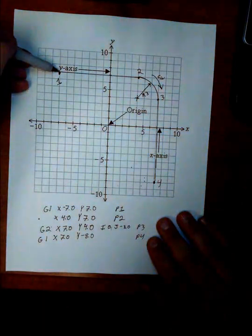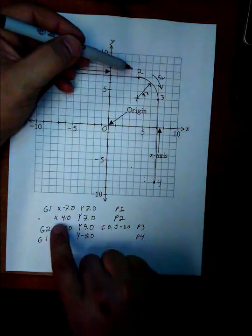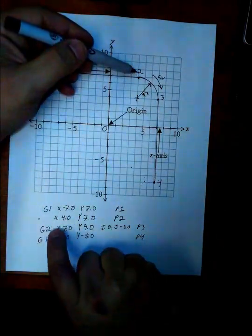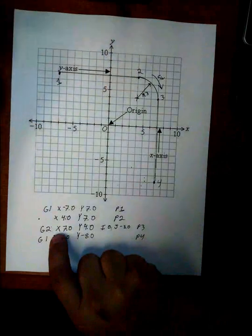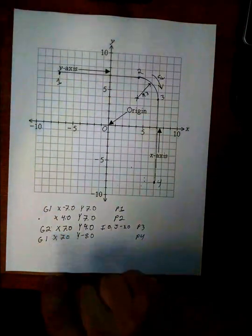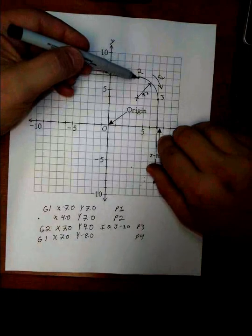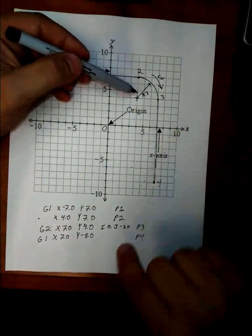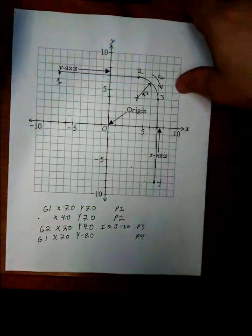So again, when we start, every arc is defined by the start of the arc, and the end of the arc, and the center of the arc. And that's really all the information that you need for these. In every instance, I'm taking the difference in X and Y, and I'm plugging it into the I and the J.